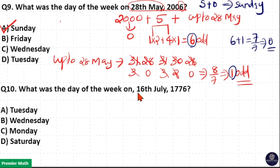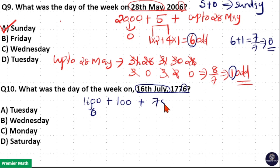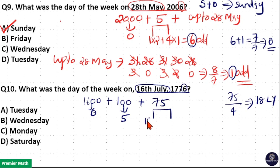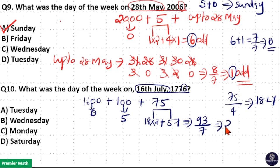Next: what was the day of the week on 16th July 1776? Up to 1600 years there are zero odd days. Remaining is 176 years, but the last year is only up to 16th July, not a complete year, so remaining is 175 years. Split as 100 years plus 75 years. In 100 years there are 5 odd days. In 75 years: 75 ÷ 4 = 18 leap years and 57 non-leap years. 18 × 2 = 36 odd days, 57 × 1 = 57 odd days; total 93 odd days. 93 ÷ 7 gives remainder 2, so 2 odd days.